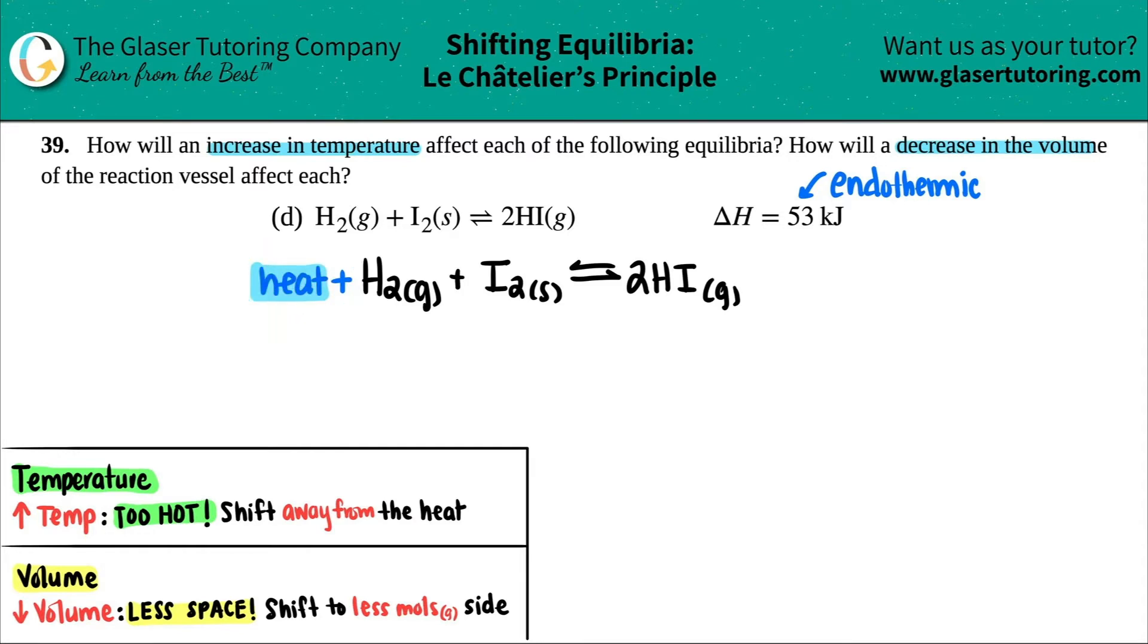Now, since I wrote the word heat, I can basically pay this no mind. I have all the information that I need in order to answer any Le Chatelier's principle question. So there's two here. We need to increase the temp and decrease the volume. What's going to happen? Let's see, increase the temp. What does Le Chatelier say?